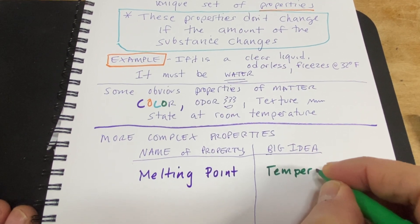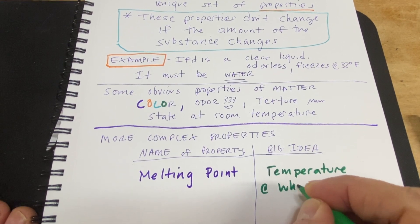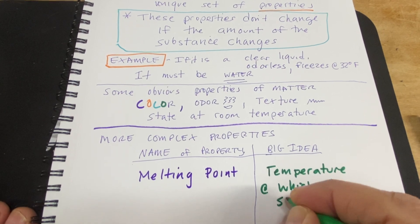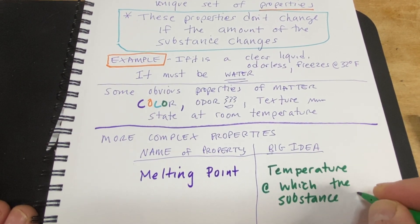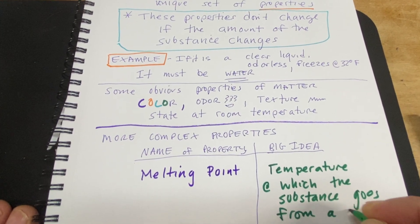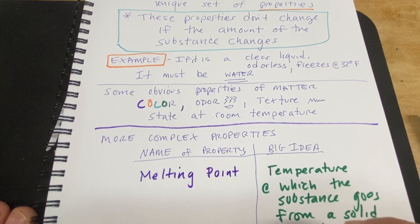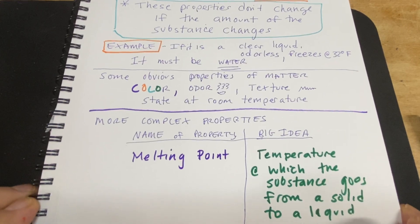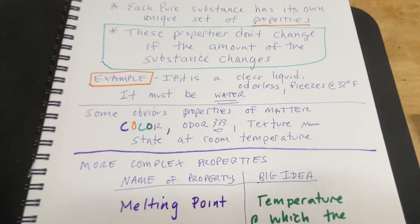A melting point is the temperature at which the substance goes from a solid to a liquid. And that's basically our big idea of property.